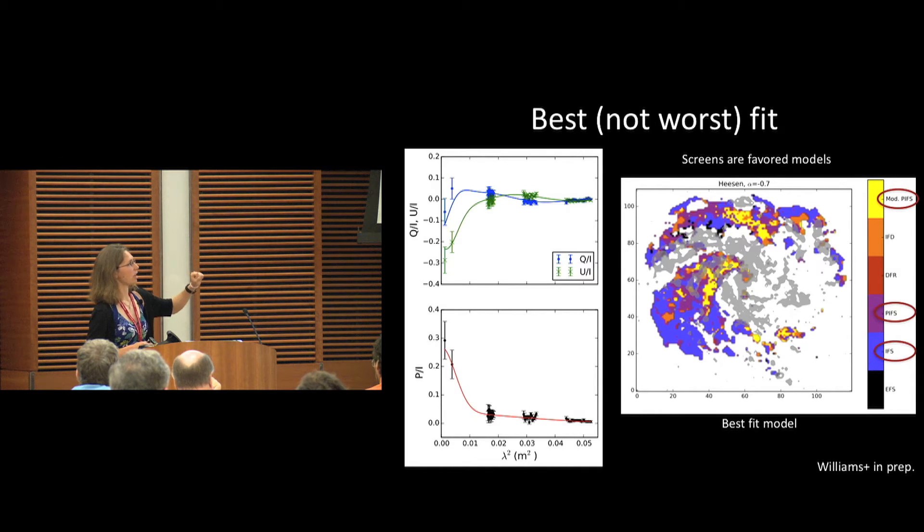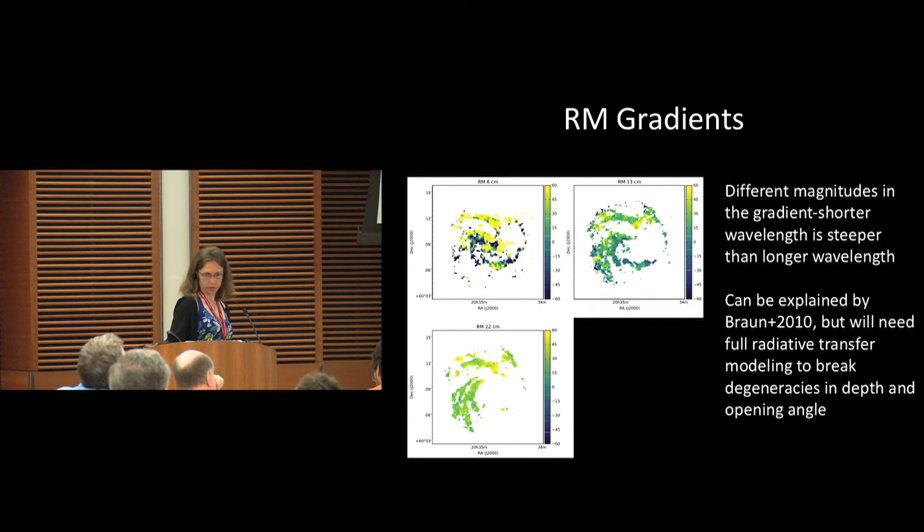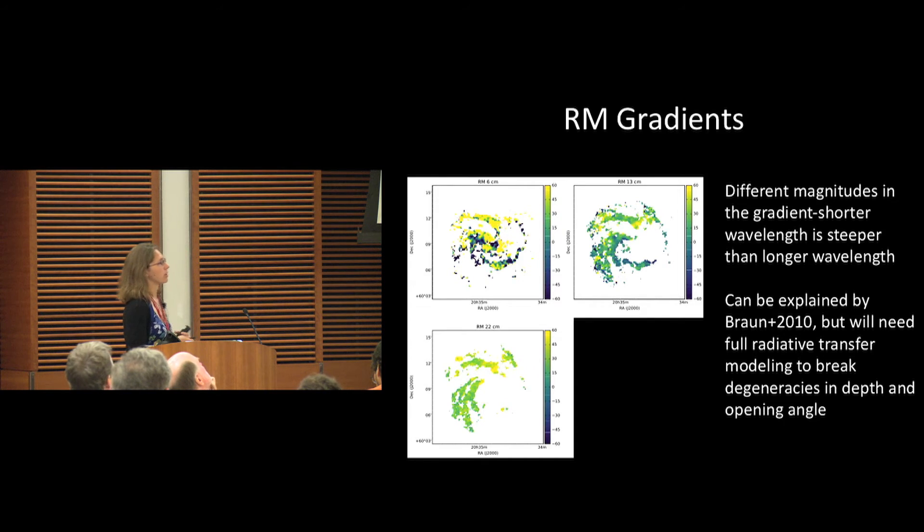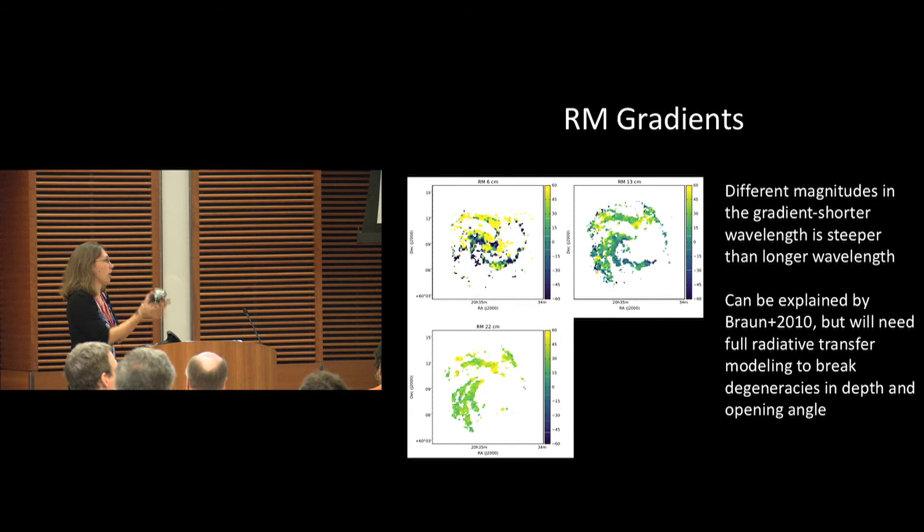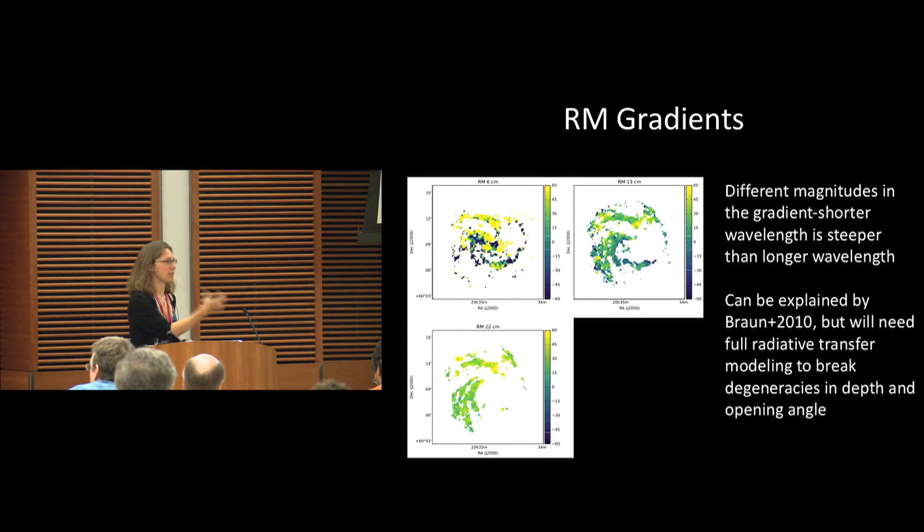One other thing when we were looking at these RM gradients, we were wondering if we could possibly fit more of a helical magnetic field. By looking at this gradient, maybe there's a change in the opening angle that we might be able to fit with more detail. I think more likely we would be looking toward the helical field toward using that galactic outflow idea as well.